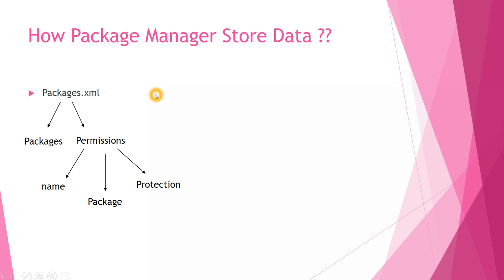How does Package Manager store data? Package Manager has lots of data about different applications installed in your system. Package Manager will store its data across three different files. The first file is packages.xml, which contains details about your installed packages and all permissions for those packages. The permissions will have three different attributes: name, package, and protection. By default, the value for the package attribute will always be Android.